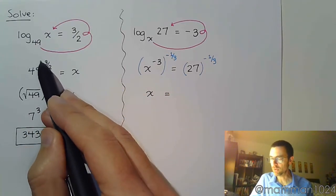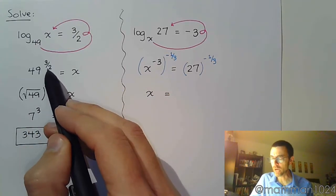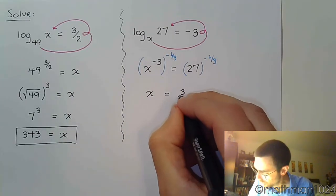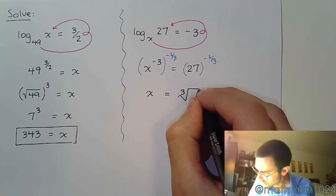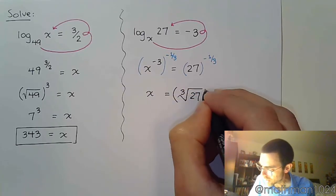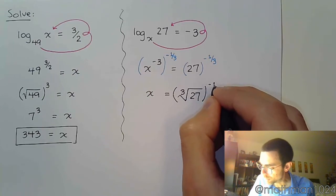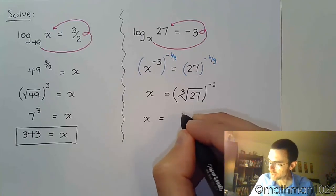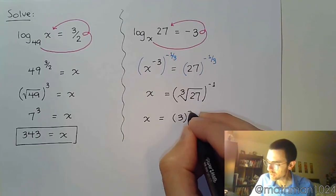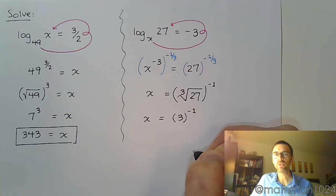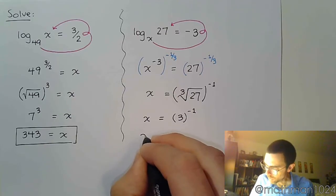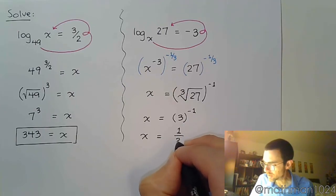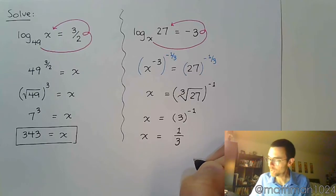Now converting from a rational power into a radical: this denominator of 3 means I'm going to have the cube root of 27, raised to that numerator power of negative 1. The cube root of 27 is 3. Now I've got 3 to the negative 1st power. When I raise to a negative power, that just means take the reciprocal. So x equals 1 over 3.